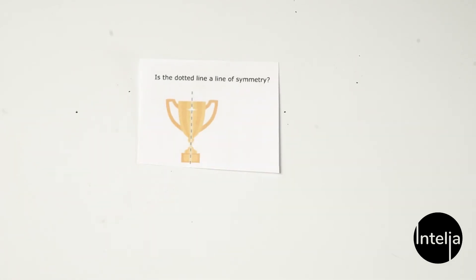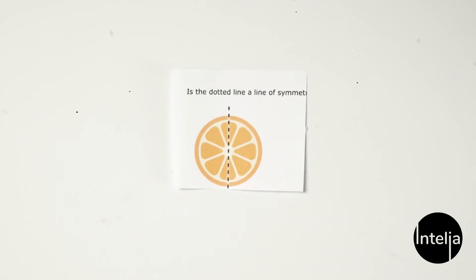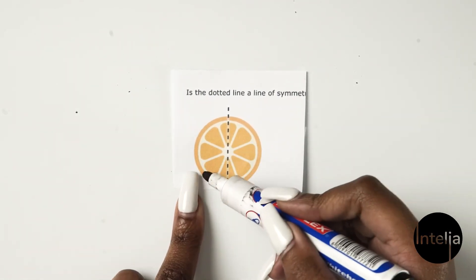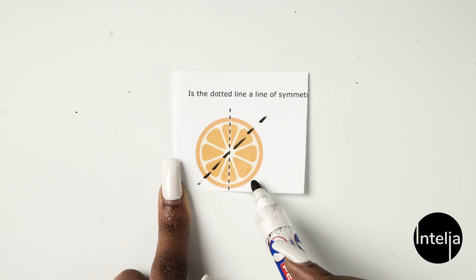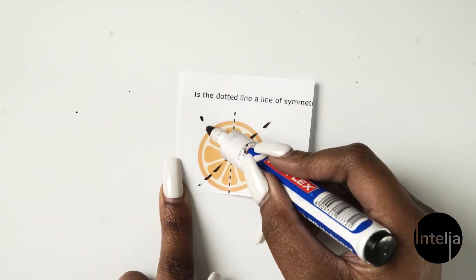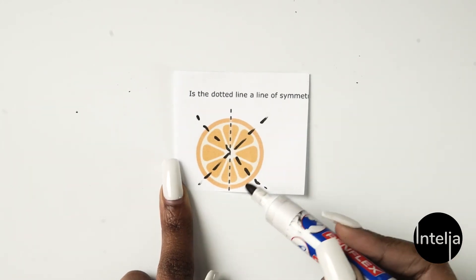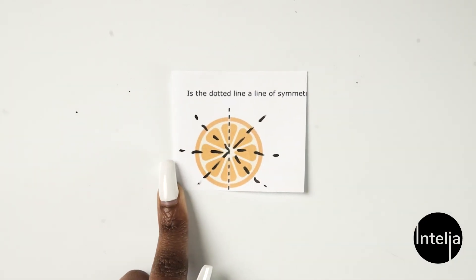And the trophy — yes, it is a line of symmetry, because everything you have on the left, you have on the right. And this shape is also a line of symmetry because the left and right are identical. Even if you had to create other lines of symmetry, they'd be viable — this would look exactly the same as that. So this shape has multiple lines of symmetry.